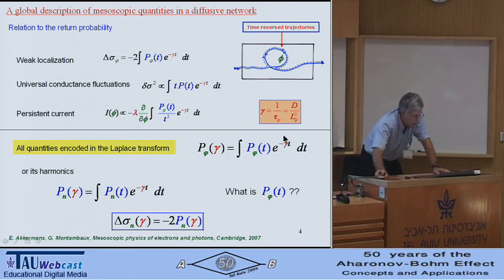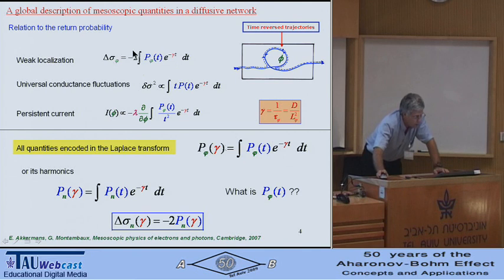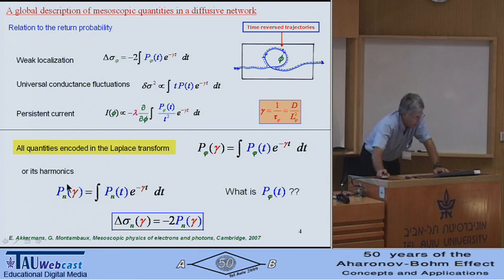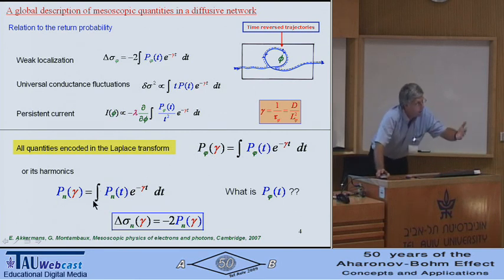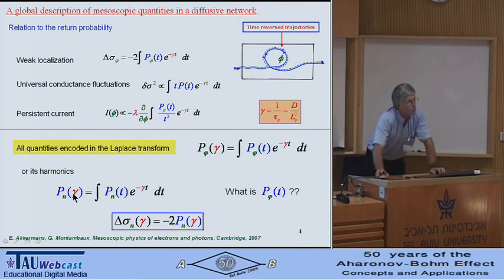The weak localization correction is nothing but the Laplace transform of the return probability. Most of all, I am concerned with the harmonic dependence — the harmonic of the flux dependence of this quantity. So I am interested in the Laplace transform and Fourier transform of the time-dependent return probability.